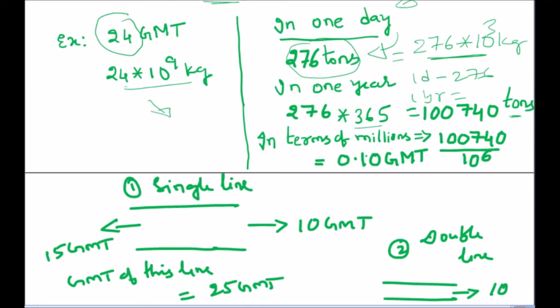In railways, this GMT data is given by the statistical department of railways on every March 31st each year. So every year we get this data on March 31st.